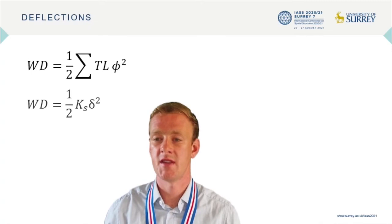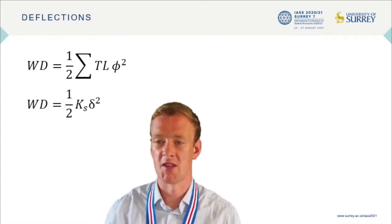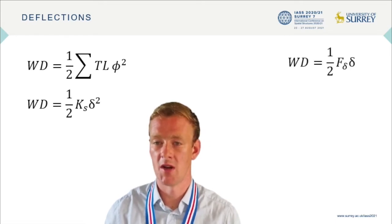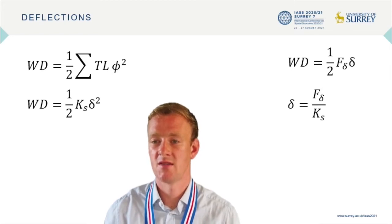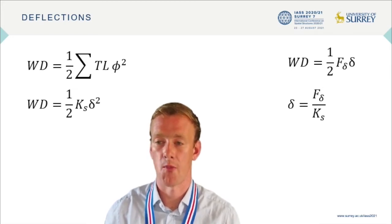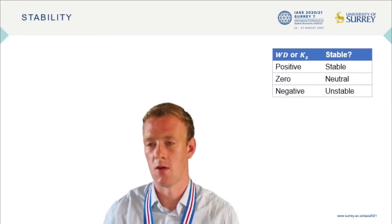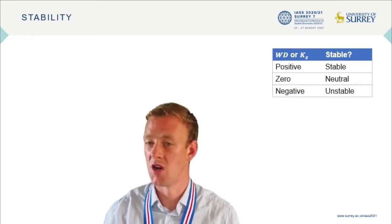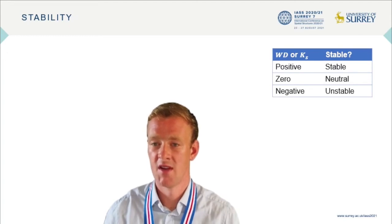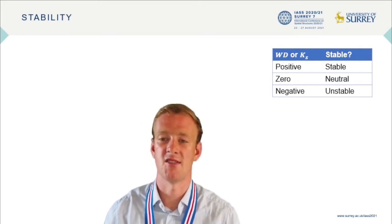The work done can also be related to the stiffness of the mechanism, where Ks is an effective stiffness and delta is the displacement of the mechanism. This also relates to the load applied to the mechanism, F-delta, and the displacement delta. Therefore, when the mechanism is loaded by a force F-delta, it is possible to use Ks to calculate the displacement delta. All that needs to be considered is the sign of the work done or effective stiffness: if positive, it is stable; if negative, it is unstable; and a zero value indicates neutral stability.